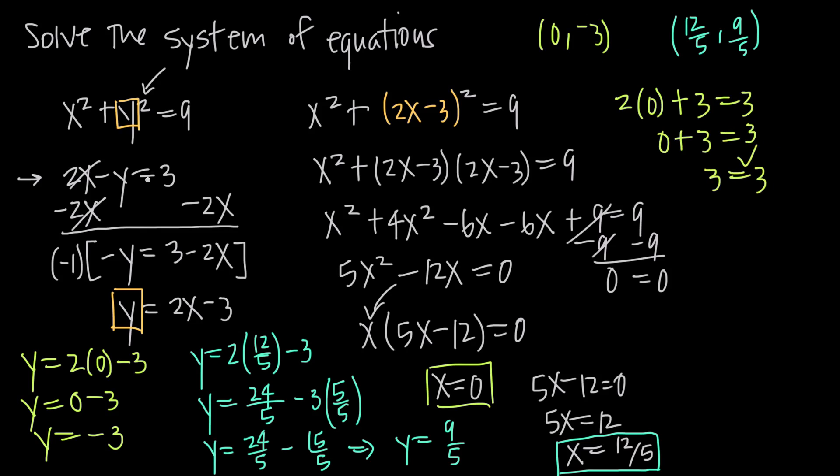If I plug in this point here, 12 fifths, 9 fifths, I'm going to get 2 times x or 2 times 12 fifths minus y or minus 9 fifths is equal to 3. I'm going to have 24 over 5 minus 9 over 5 is equal to 3. Multiplying everything by 5 to get rid of the fractions, I'll get just 24 minus 9 equals 15. 24 minus 9 is 15, so I get 15 equals 15, and that checks out also. So now I know that both of these here are real solutions to this system of equations.